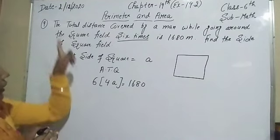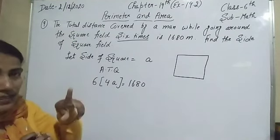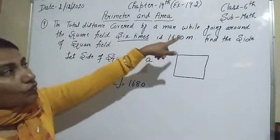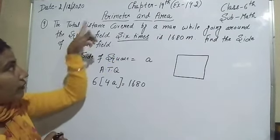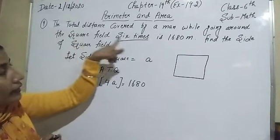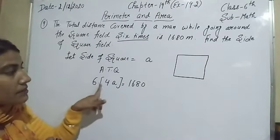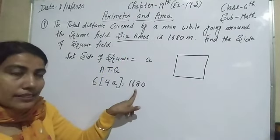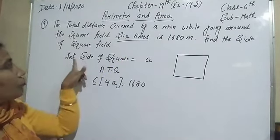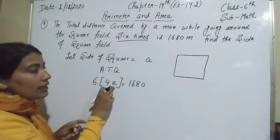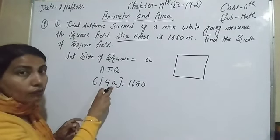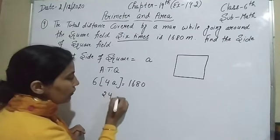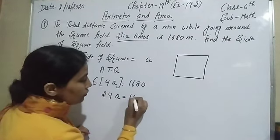The total distance covered means we are talking about the perimeter. Six times the perimeter of the square is given as 1680 meters, and we have to find the side, meaning the value of a. So: 6 × 4 = 24, giving us 24a = 1680.